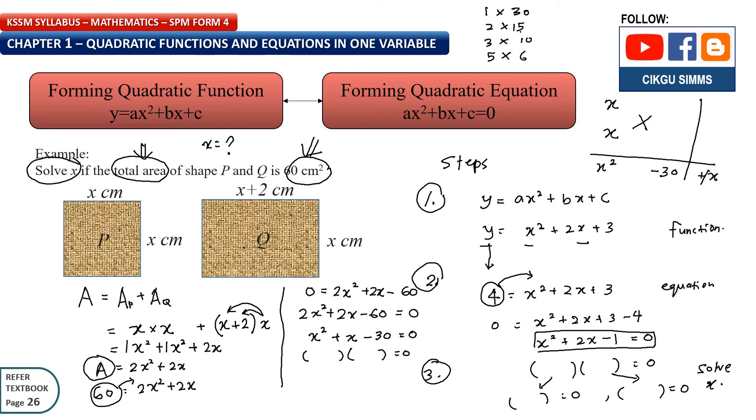Plus and minus will give you 1. So this pair, right? 6 minus 5 will give you 1. 6 minus 5 will give you 1.